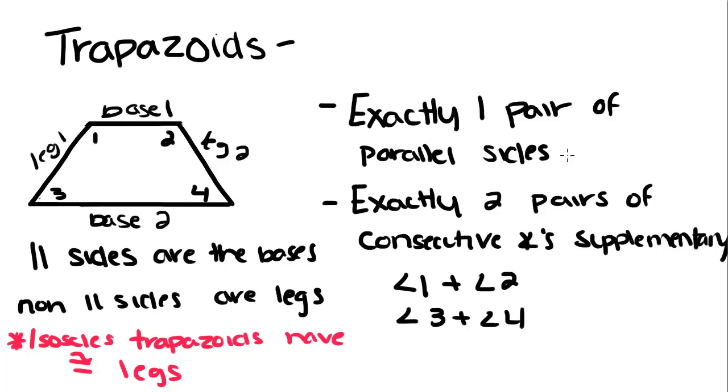Okay, so today we're going to talk about trapezoids. A trapezoid is a quadrilateral, which just means that it has four sides.